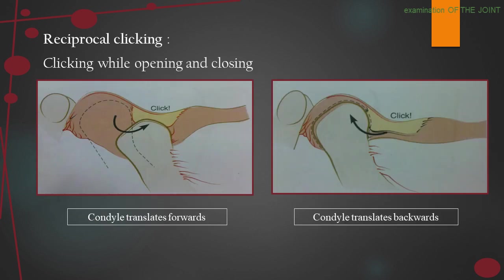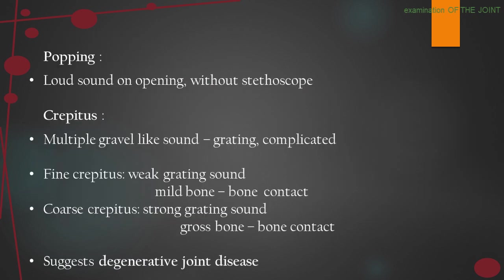Reciprocal clicking refers to clicking while opening and closing — the condyle translates forward or backward producing a click sound. Popping sound is a loud sound on opening audible without a stethoscope. Crepitus is a multiple gravel-like grating sound. Fine crepitus is a weak grating sound with mild bone-to-bone contact. Coarse crepitus is a strong grating sound with gross bone-to-bone contact, suggesting degenerative joint disease.